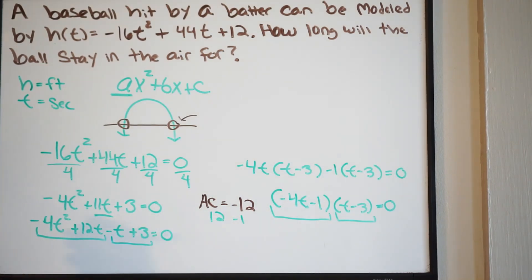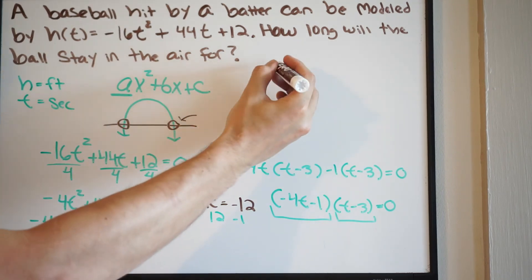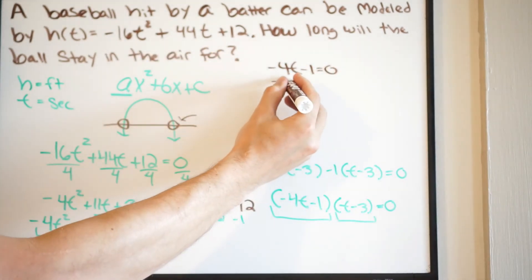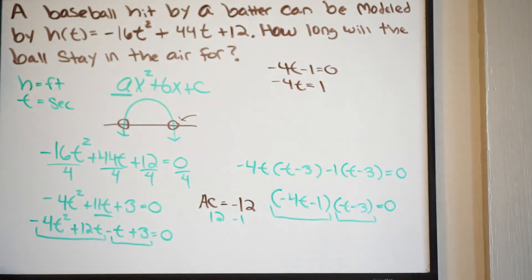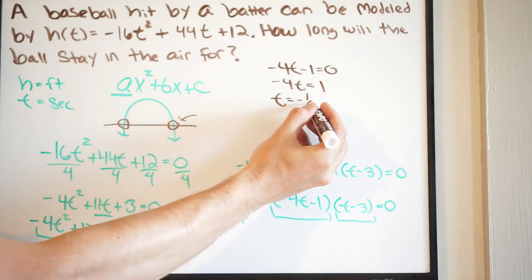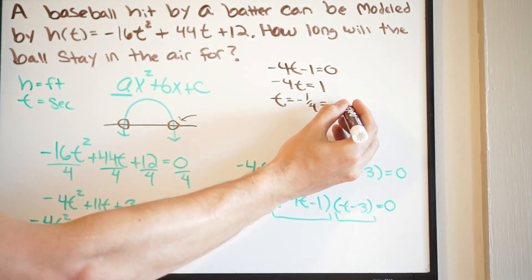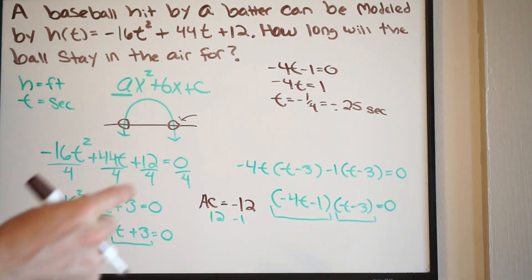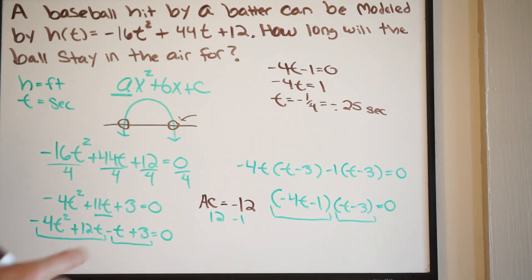Doing this out, we're going to get the following. We get negative 4t minus 1 equal to 0. And then we're going to get negative 4t equal to 1. And then we get t is equal to negative 1 quarter, which is equal to negative 0.25. And again, we're talking about the time here. This is going to be seconds. So you need to ask yourself here, does this make sense? Remember what the question is asking. It says, how long will the ball stay in the air for? So here's one of our zeros. And you can see here that that does not make any sense. So you have to use some discretion here. This is not going to be our answer. So let's look at our other factor.